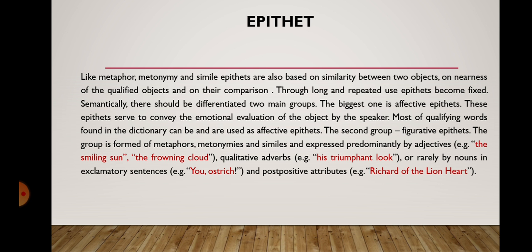Through long and repeated use, epithets become fixed. Semantically, there should be differentiated two main groups. The biggest one is affective epithets — these serve to convey the emotional evaluation of the object by the speaker; most qualifying words found in the dictionary can be used as affective epithets. The second group is figurative epithets — formed of metaphors, metonymies, and similes, expressed predominantly by adjectives. For instance: 'the smiling sun,' 'the frowning cloud,' 'his triumphant look,' or, rarely, by nouns in exclamatory sentences — 'You ostrich!' — and post-positive attributes — 'Richard of the lion heart.'